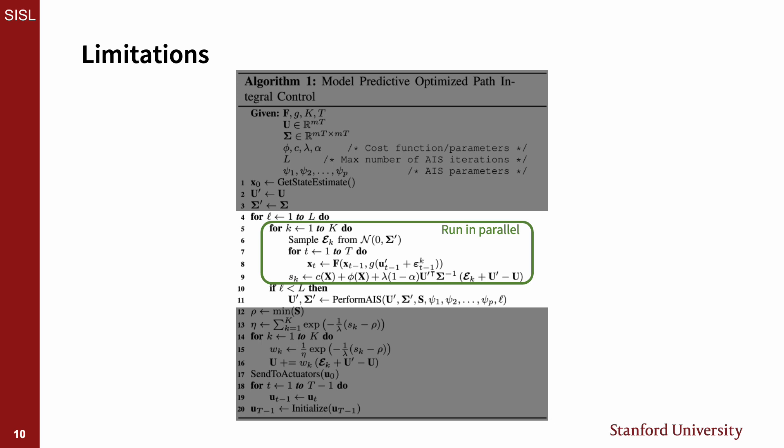However, MPOPI requires propagating k samples in parallel in l sequential steps, where the execution of the AIS algorithm must occur after each propagation of the k samples.